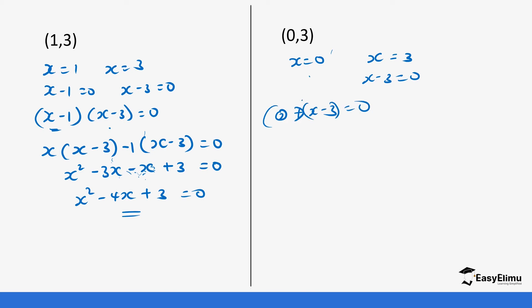Because there is a 0, we are not going to use it. So it's going to be just x times (x minus 3) equals 0, giving x squared minus 3x equals 0. That is going to be our equation.